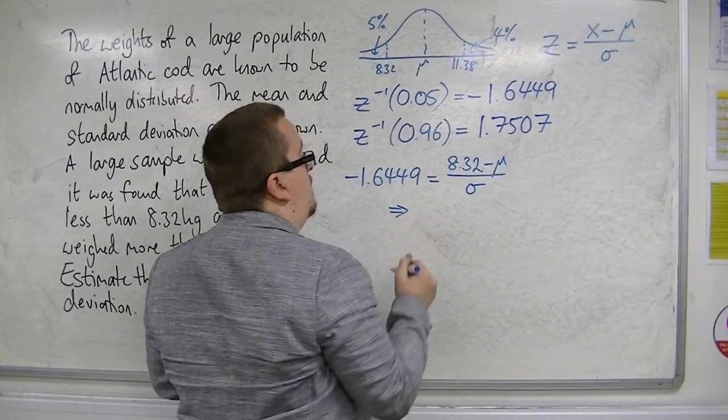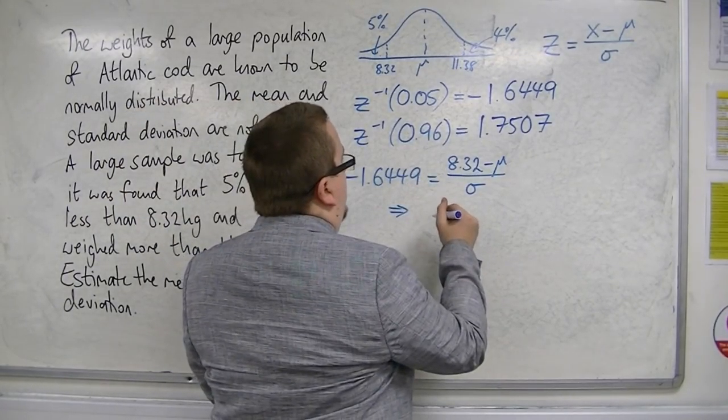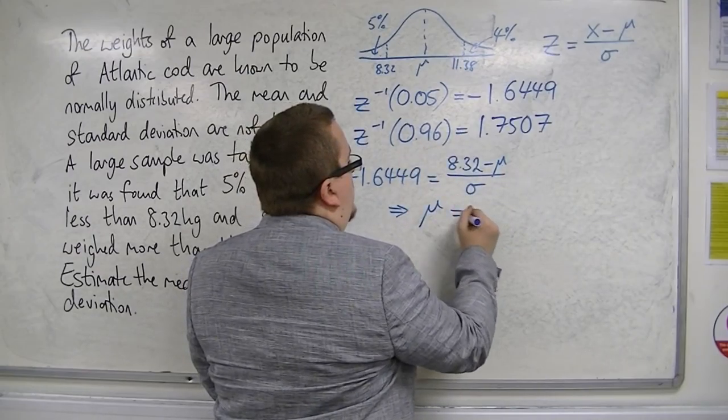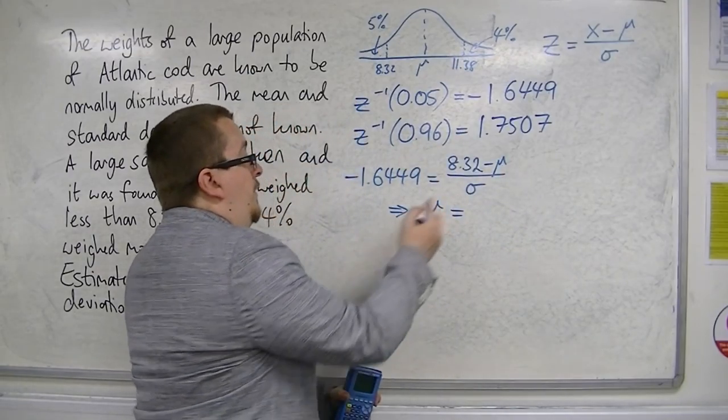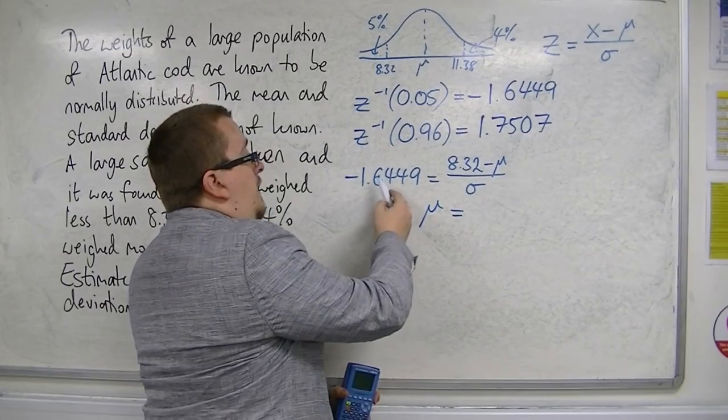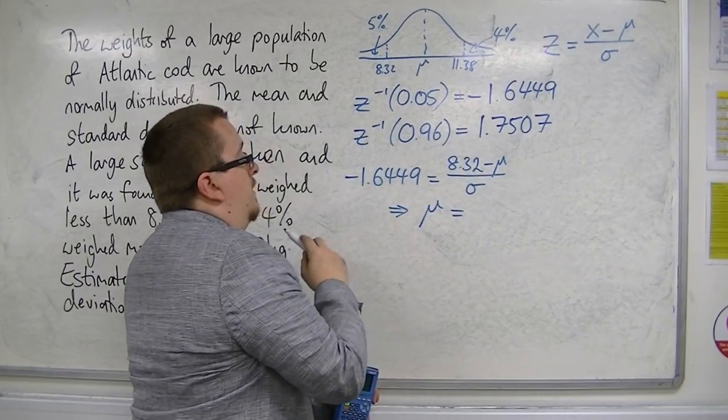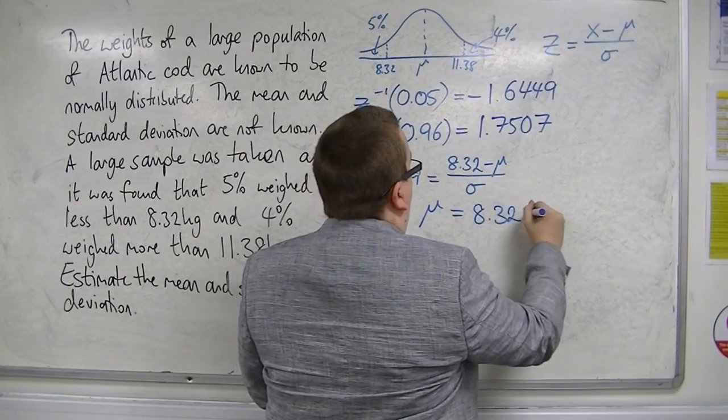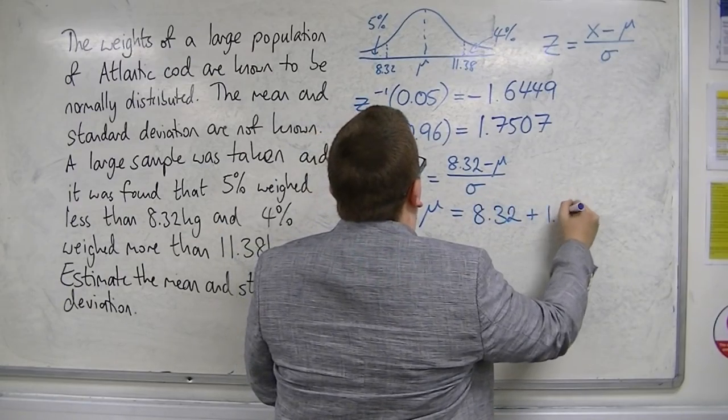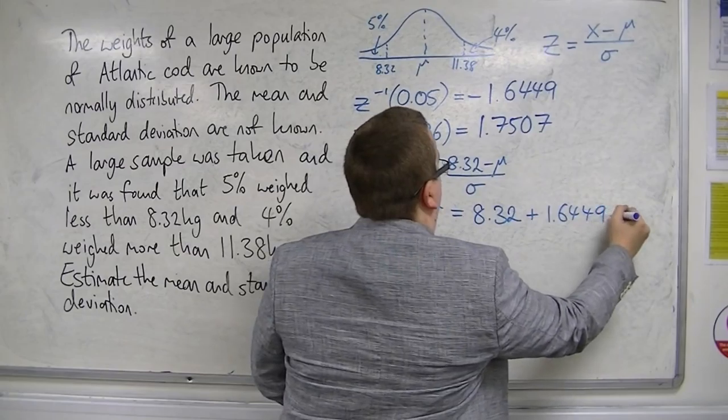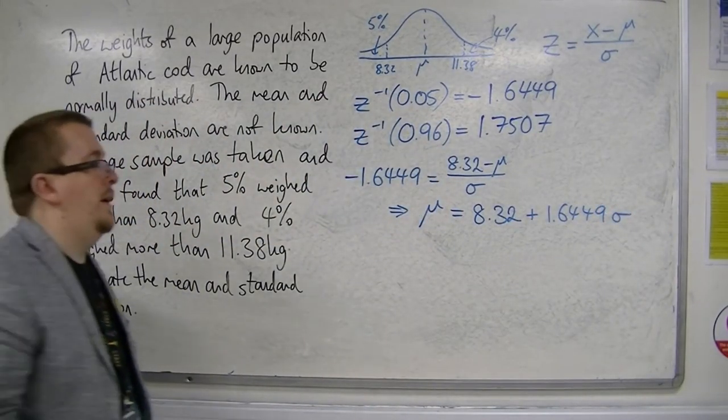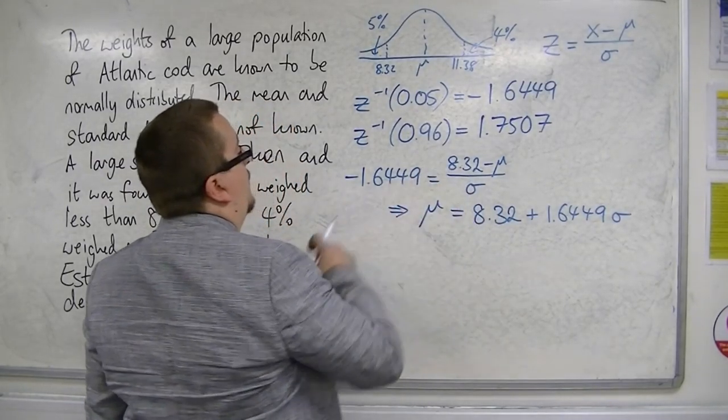So, if we multiply both sides by the standard deviation, then that means, and rearrange it, that means we can write the mean as 8.32 plus 1.6449 sigma. So, it can be reorganized that way. That's the first equation.